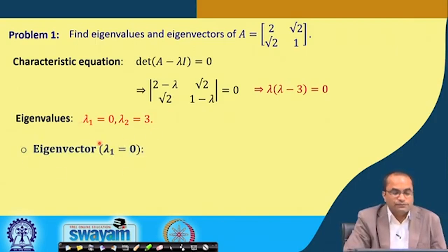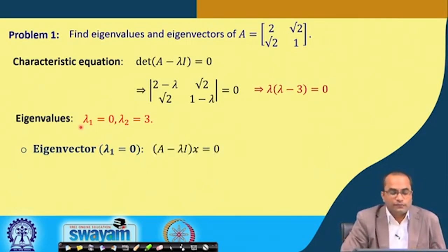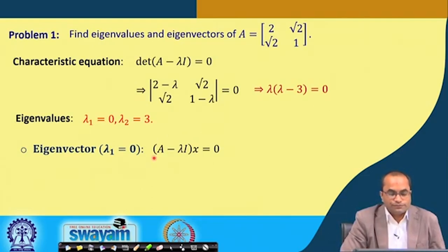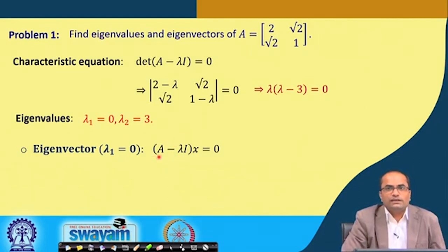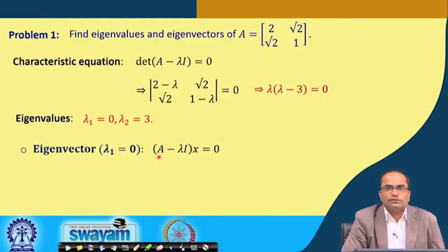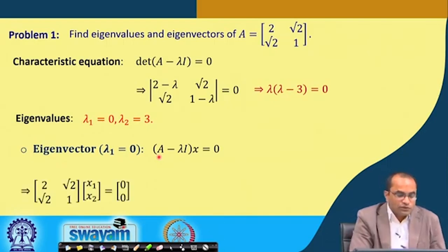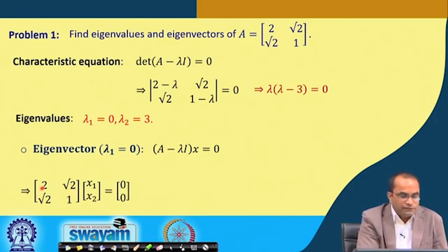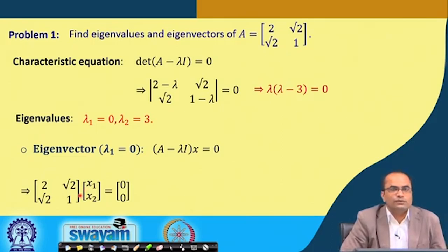Now we will compute the eigenvector corresponding to λ₁ = 0. We have to solve the system A − λI·x = 0. Since λ = 0, this is simply Ax = 0 — we are finding the null space of A. The generator of the null space, or any basis of the null space, will be the eigenvector.